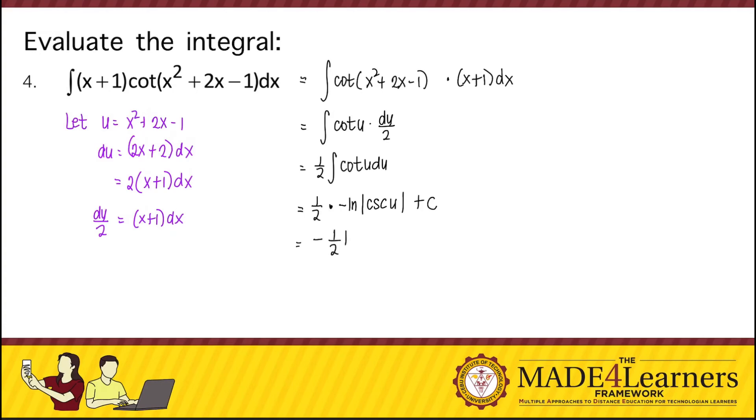But if you have a negative sign, you always write it first, so that's negative 1 half, and then ln of cosecant of u, which is x squared plus 2x minus 1 plus c.